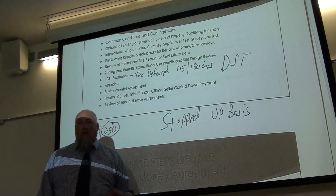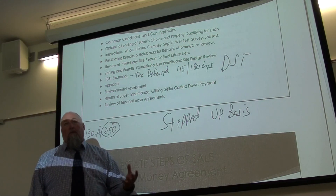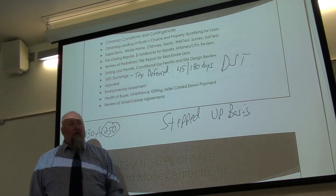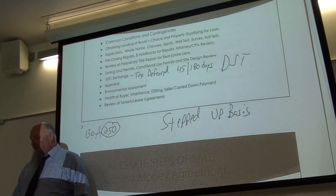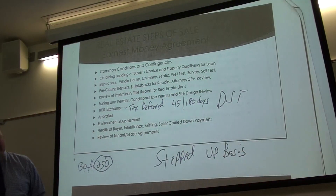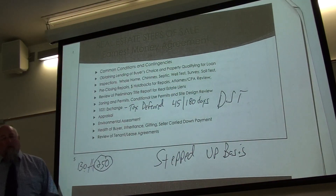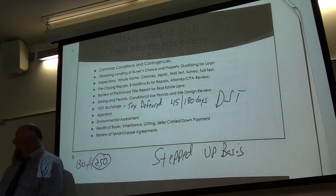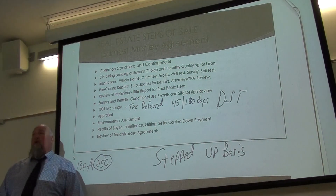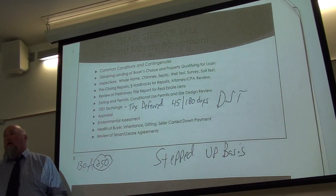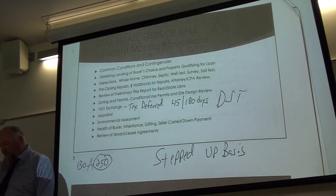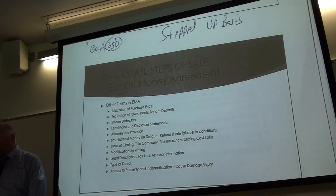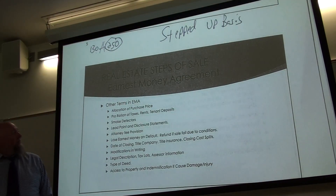You need to make sure you're okay with the terms of the lease. The whole idea of conditions and contingencies is to give a buyer or seller the ability to essentially terminate the contract if these things don't occur. There are other provisions you're going to put into an earnest money agreement.